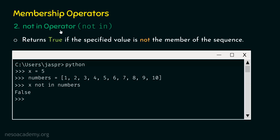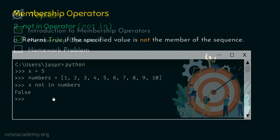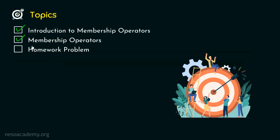Remember that the Not In Operator returns true if the specified value is not a member of the sequence. But 5 is a member of the sequence, so we get false as a result. This is all we need to understand about membership operators. Now let's move on to the homework problem of this presentation.